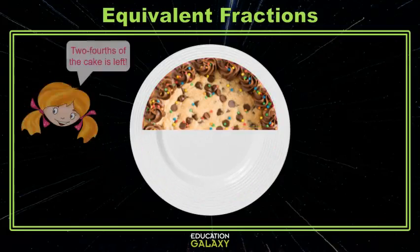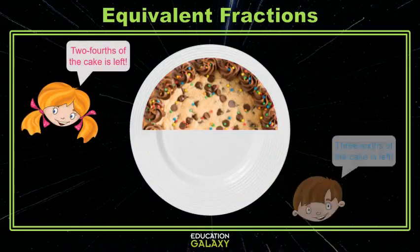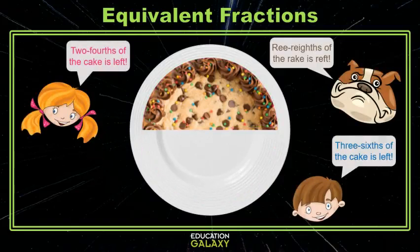Well, then Molly noticed and she exclaimed, two fourths of the cake is left. And when her brother noticed, he said that three sixths of the cake was left. Then the dog noticed, and for some reason, he chimed in and barked something that sounded like three eighths of the cake is left. So who was right, and who was wrong?